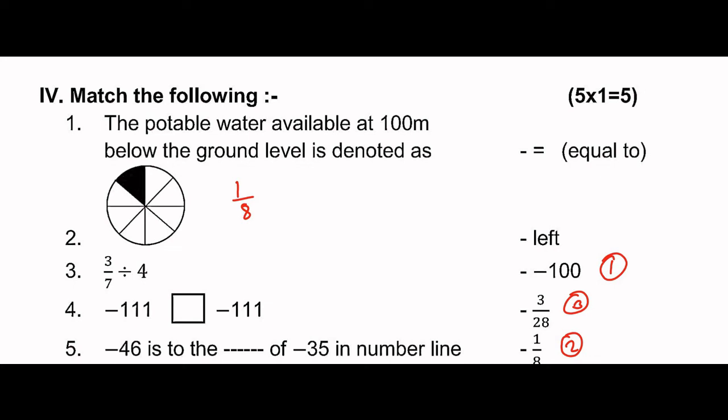Next: minus 1, 1, 1, minus 1, 1 - equal to. That gives 2 equal and 1 equal - answer is 1 to 4. Next: minus 46 is to the dash of minus 35 on the number line. Minus 46 is to the left of minus 35. Answer is left.